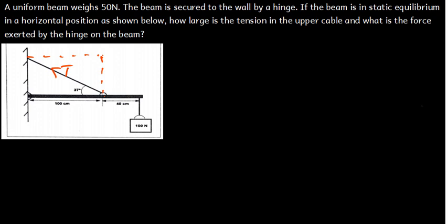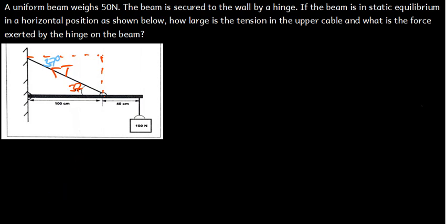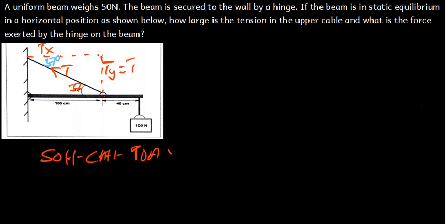We know that this angle here is 37 degrees. The angle which is here is the same as the angle which is there, meaning that this part here is also going to be 37 degrees. Using SOHCAHTOA, sine is opposite over hypotenuse — the hypotenuse is T, the opposite is T_Y — meaning T_Y is going to be T sin 37, and T_X is going to be T cos 37.